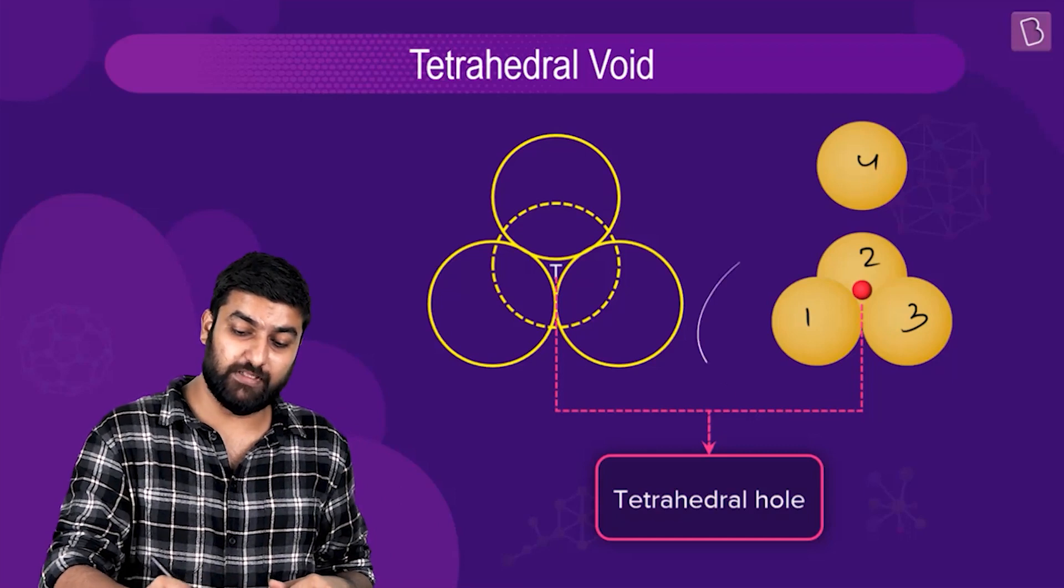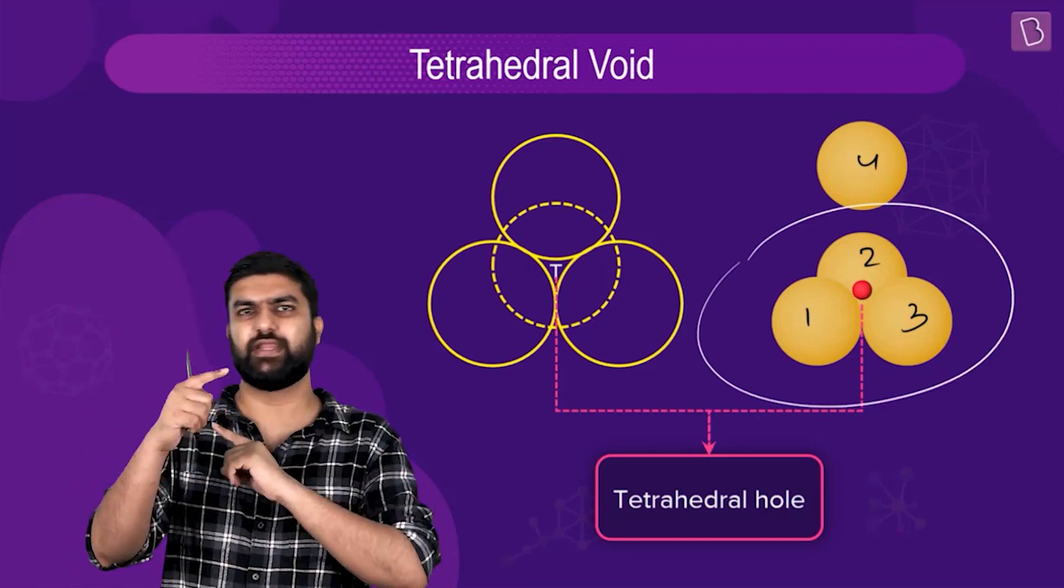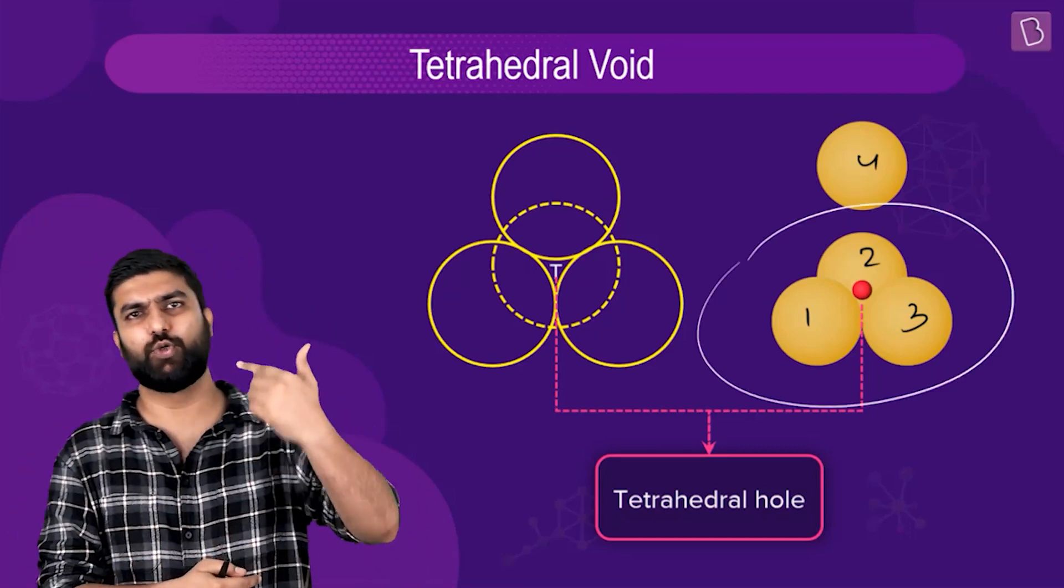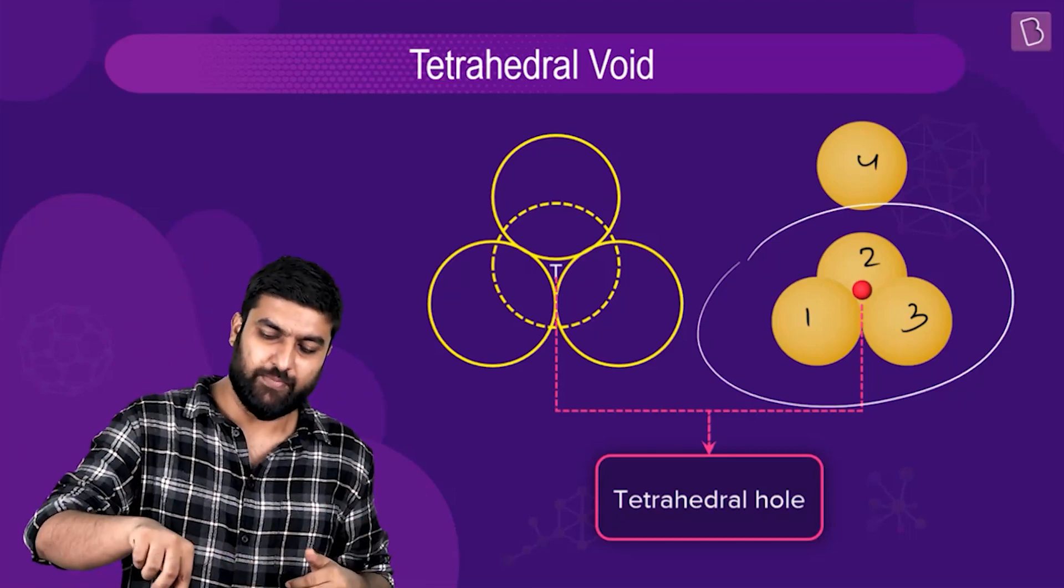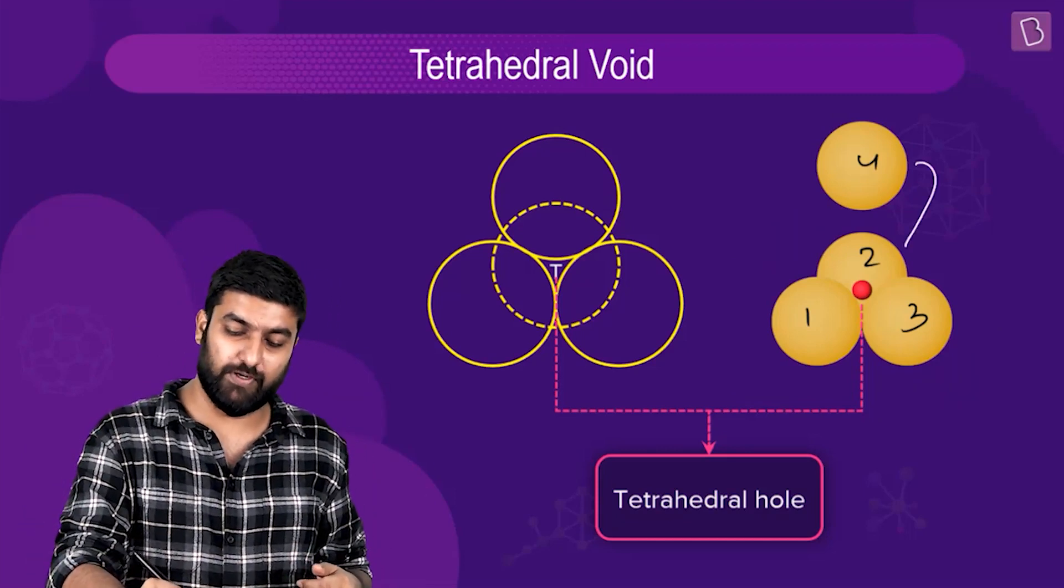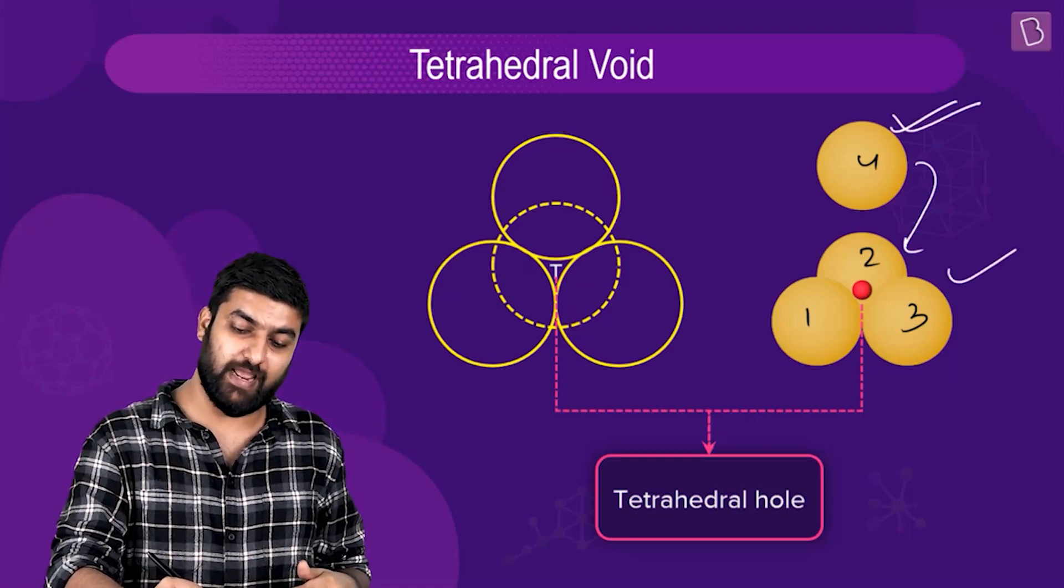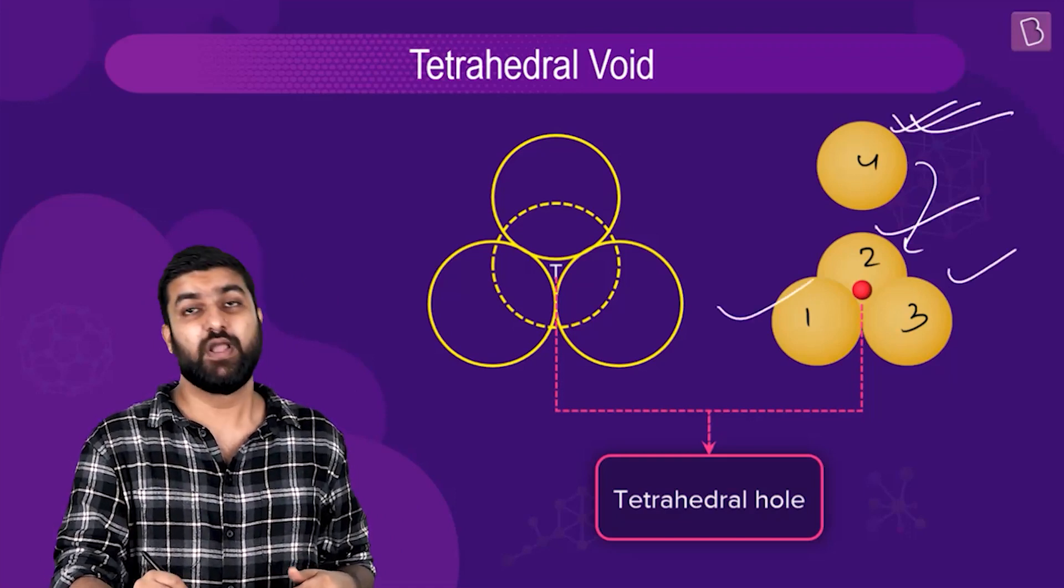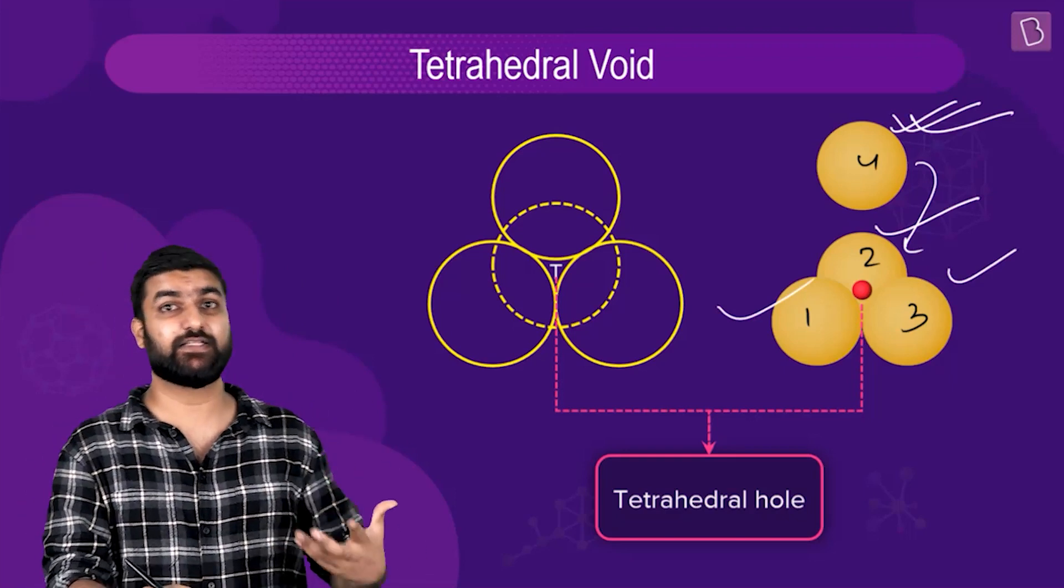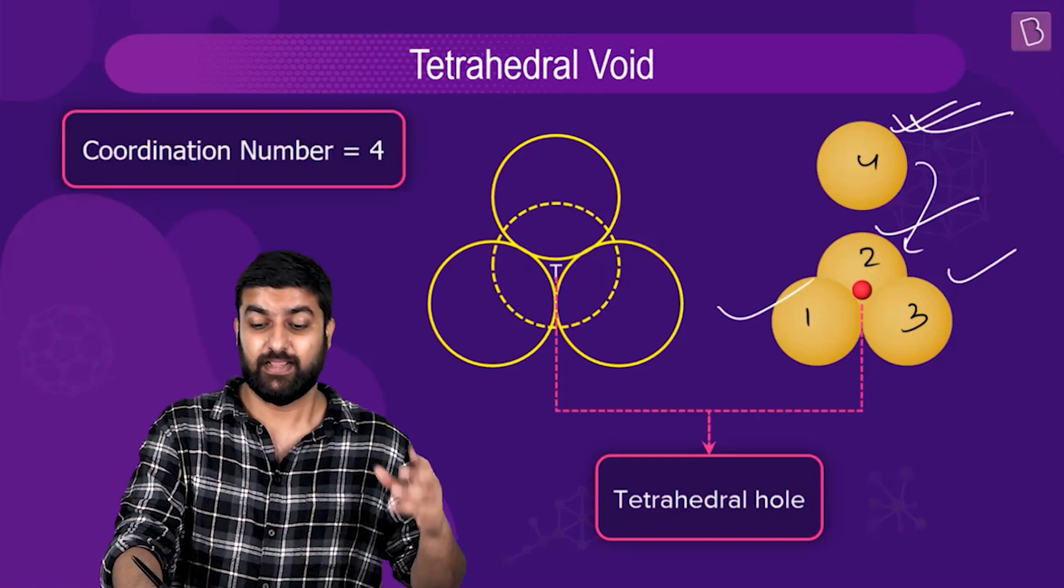When this fourth particle is placed on top, particle four will be in touch with three, one, and two. That is one relation we are going to utilize. Also notice that the coordination number of the particle or the impurity residing in the void...